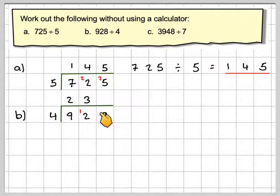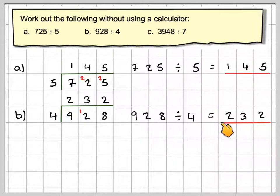So there's no remainders. We don't need to worry about putting anything up here now. And then 8 divided by 4 is 2. So 928 divided by 4 gives me an answer, 232.